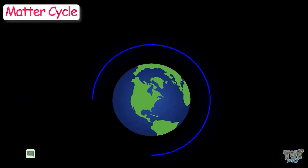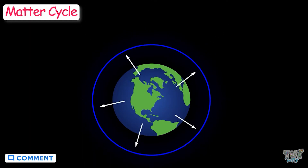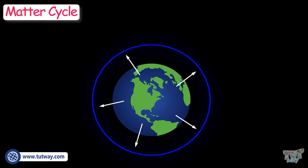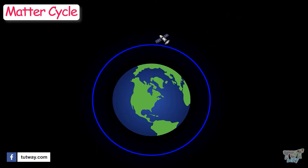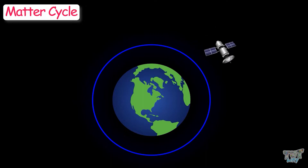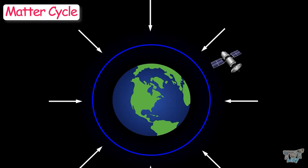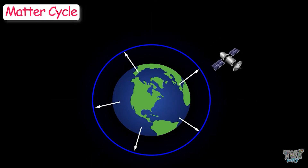Our Earth is a closed system. That is, nothing can enter or leave the Earth or its atmosphere, unless some unusual thing happens — like the entrance of a meteorite in its environment, or the launching of satellites. Otherwise, the Earth is a closed system. Nothing enters or leaves the Earth's atmosphere.